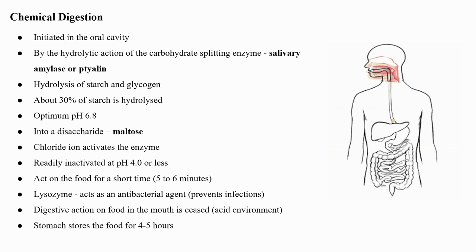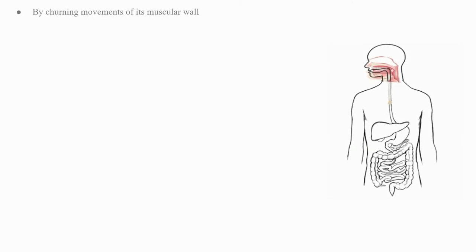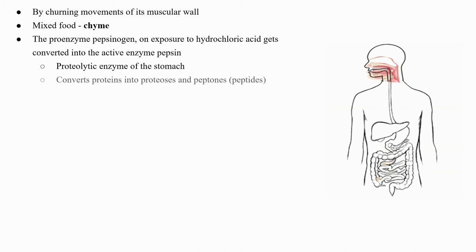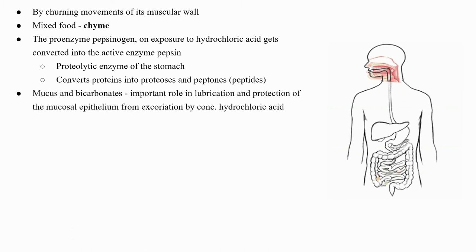The digestive action in the mouth soon ceases in the acidic environment when secretion begins in the stomach. The stomach stores food for four to five hours; the food mixes thoroughly with acidic gastric juice by churning movements of its muscular wall, forming the chyme. The proenzyme pepsinogen, on exposure to hydrochloric acid, gets converted into the active enzyme pepsin — the proteolytic enzyme of the stomach.